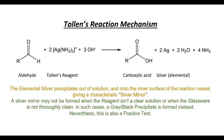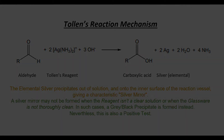The carboxylic acid is not directly formed, as the reaction takes place under alkaline conditions. A silver mirror may not form in some cases, especially when the reagent is not a clear solution or when the glassware is not thoroughly clean. In such cases, a grey to black precipitate is formed instead. Nevertheless, this is also considered a positive test.